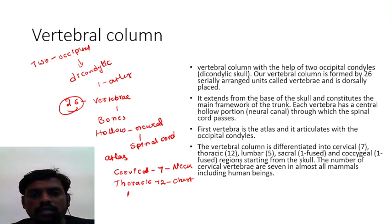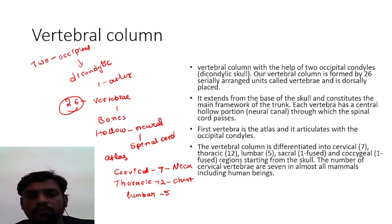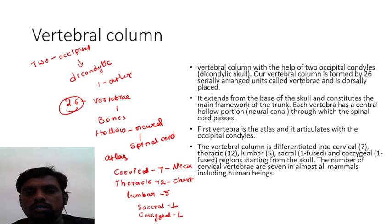Below the thoracic region, at the stomach region, there is a region called the lumbar region. Five lumbar vertebrae are present. Below the lumbar is the sacrum, and one sacral bone is present. The tip of the vertebral column contains the coccygeal bone — only one coccygeal bone is present.